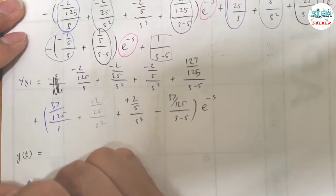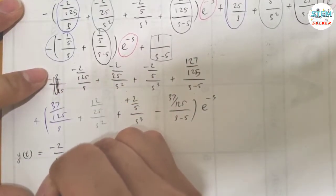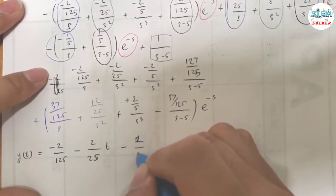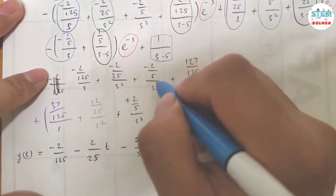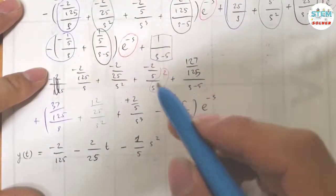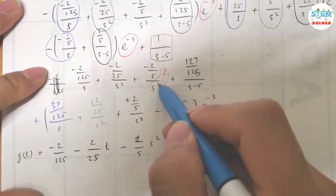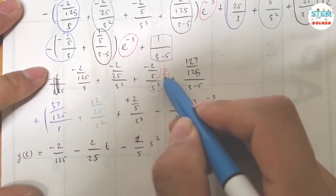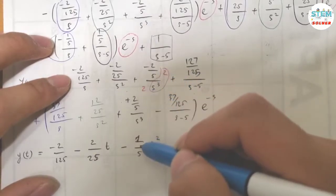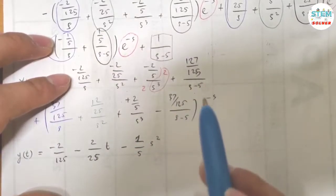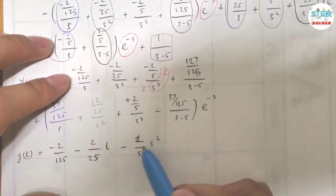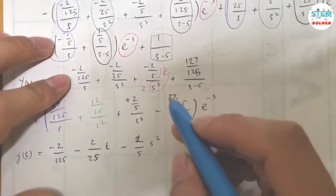Now it's time to take the inverse Laplace transform on both sides. So applying the inverse Laplace transform, I have Y(t) equals: negative 2/125, minus 2/25 times t, minus 1/5 times t squared. The reason I have negative 1/5 for s squared is because the inverse Laplace of (negative 2/5)/s squared is negative 2/5 divided by 2, which gives negative 1/5 times t. Plus 37/125 times e to the 5t for the last term.